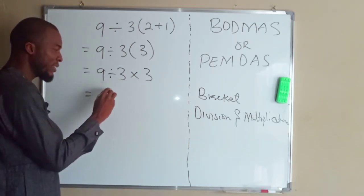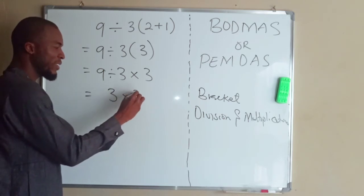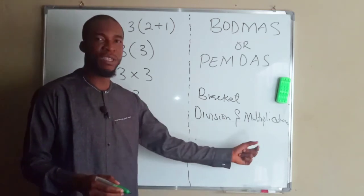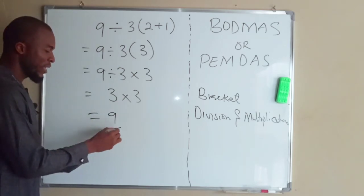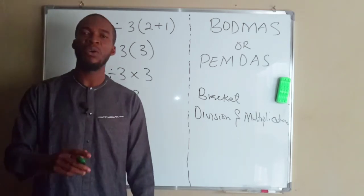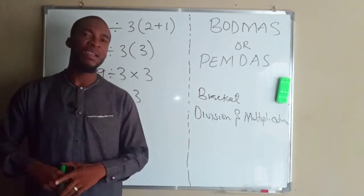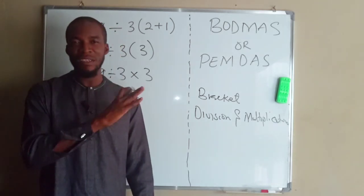9 divided by 3 is 3, then times 3. We don't have anything except multiplication, and hence 3 times 3 equals 9. Therefore, 9 is the most correct answer. I believe I have terminated this argument.